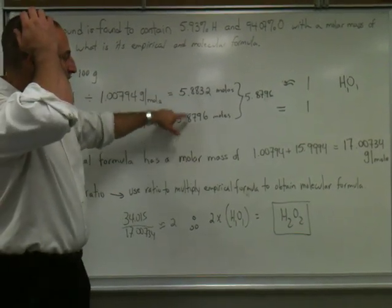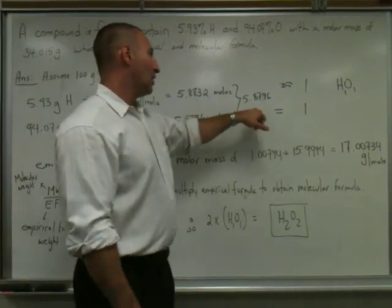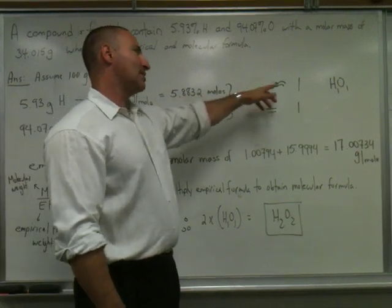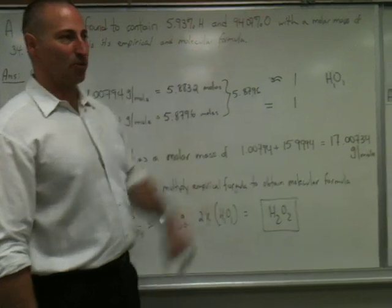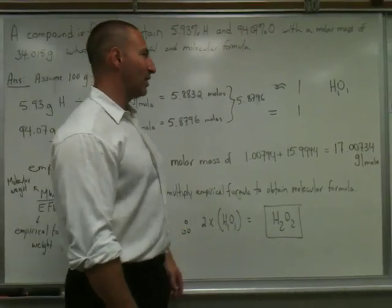You then take the lower of the two numbers, and you divide both numbers by it to create a ratio. When you divide 5.8832 by 5.8796, you get very close to 1. That's why I put about 1. I ignored the 0.02 or whatever you get in the calculation. It's 1. It's a 1 to 1 ratio.